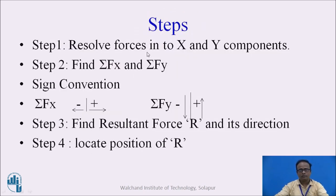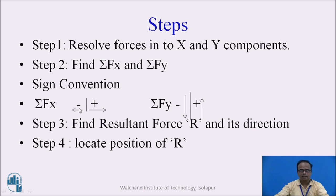These are the steps involved while solving the problem. Step 1: first of all we have to resolve the forces into X and Y components. Step 2: we have to find out the summation of all forces in the X direction and summation of all forces in the Y direction. For this, we refer the sign convention — rightward direction force is taken as positive and leftward direction force is negative. While calculating summation of Fy, upward direction force is positive and downward direction force is negative.